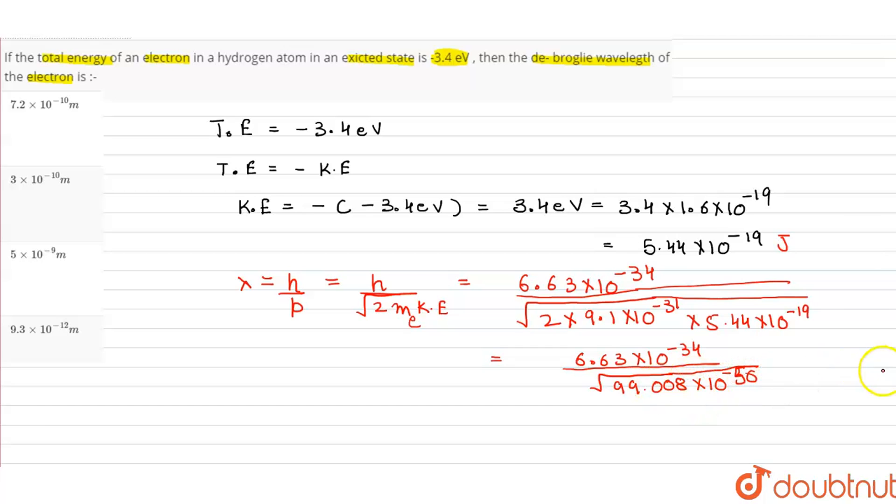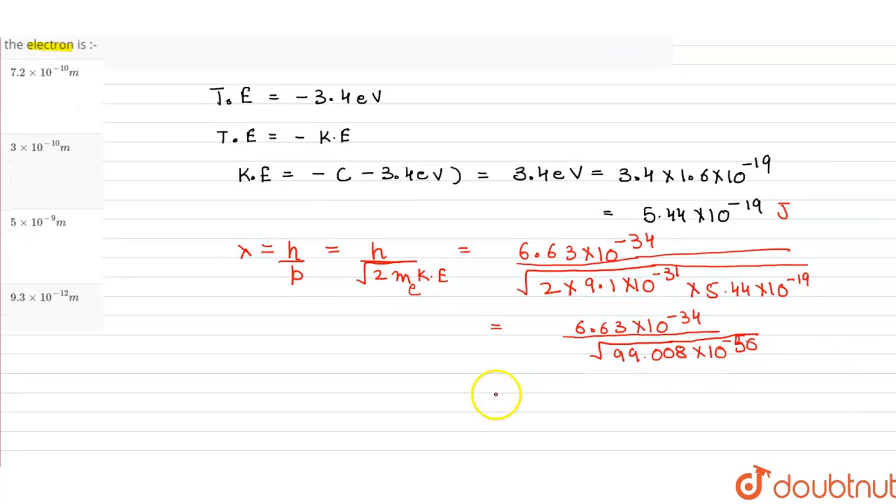Now we can simplify. The denominator is 99.008. We have 10 times 10 raised to the power minus 25. Because it was 50, so it became 25.